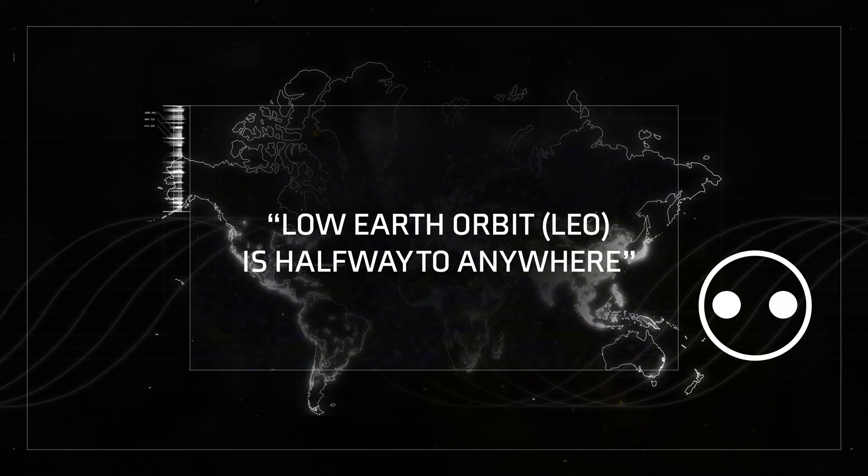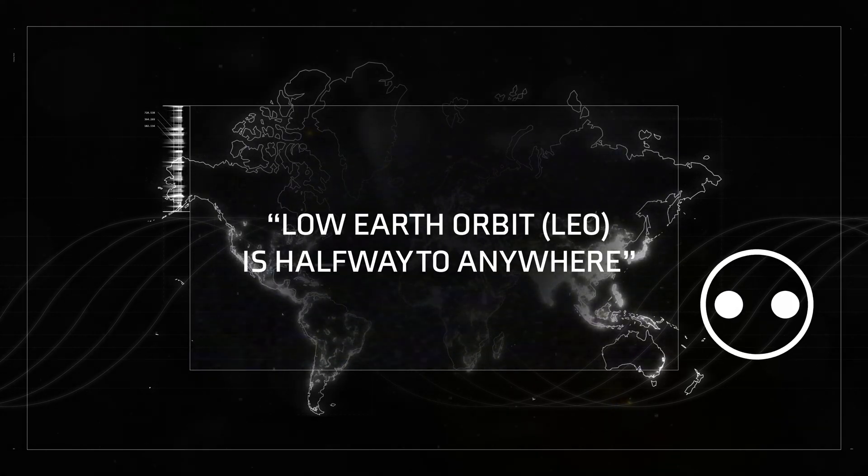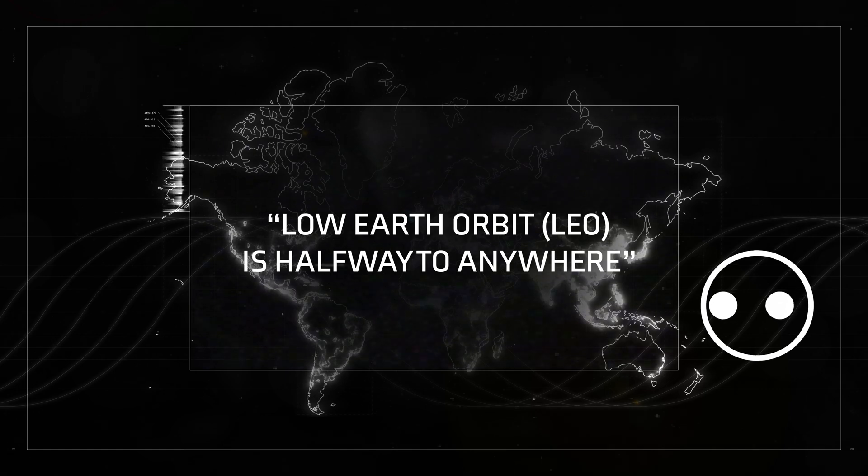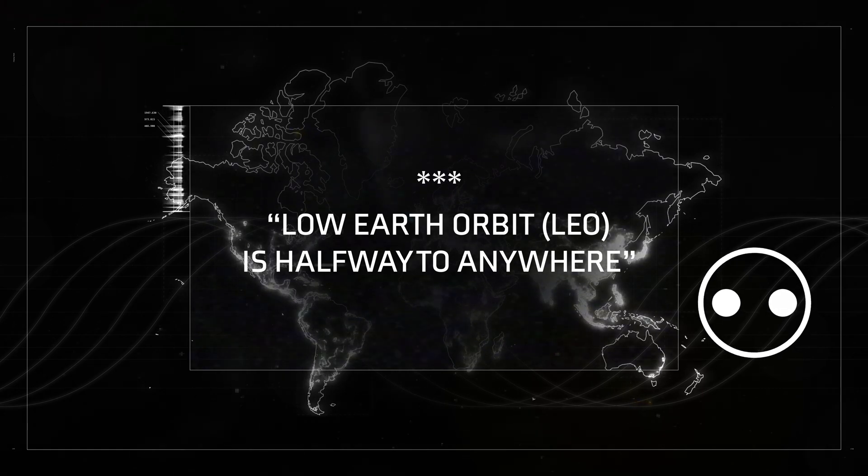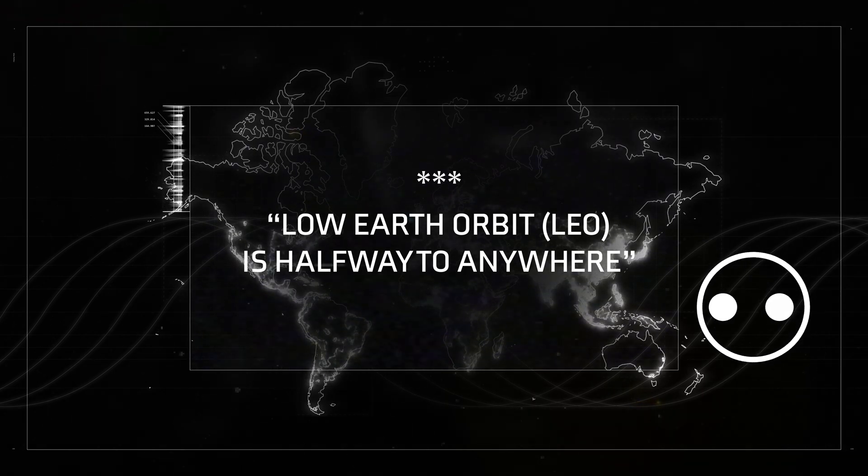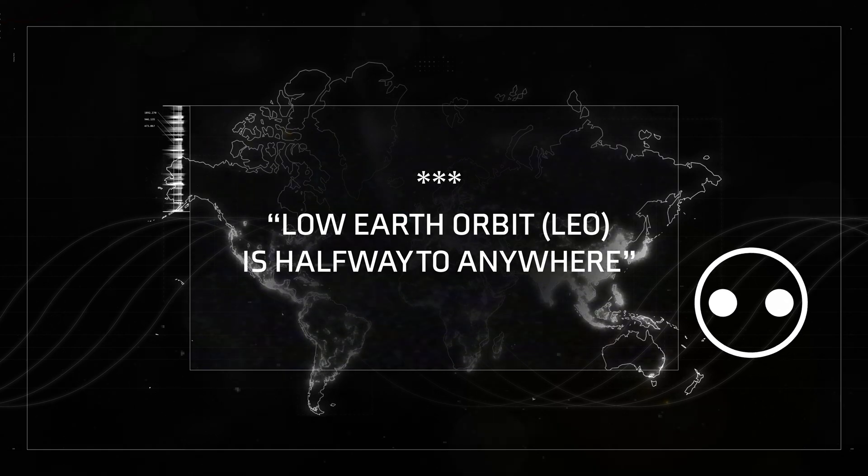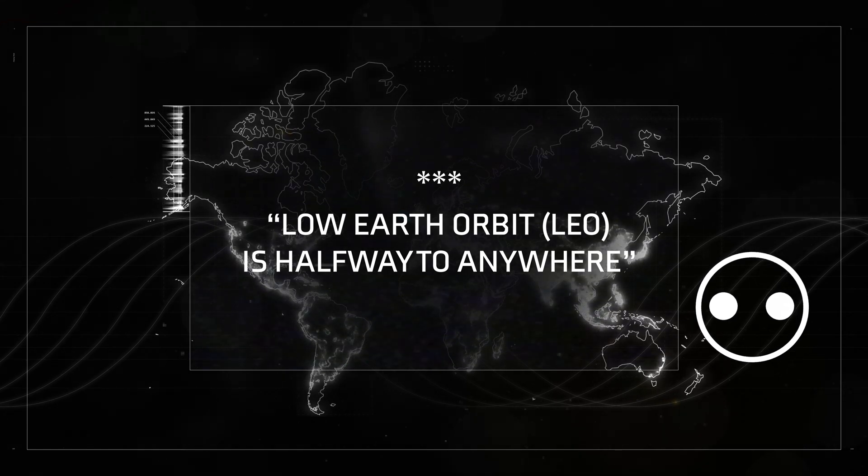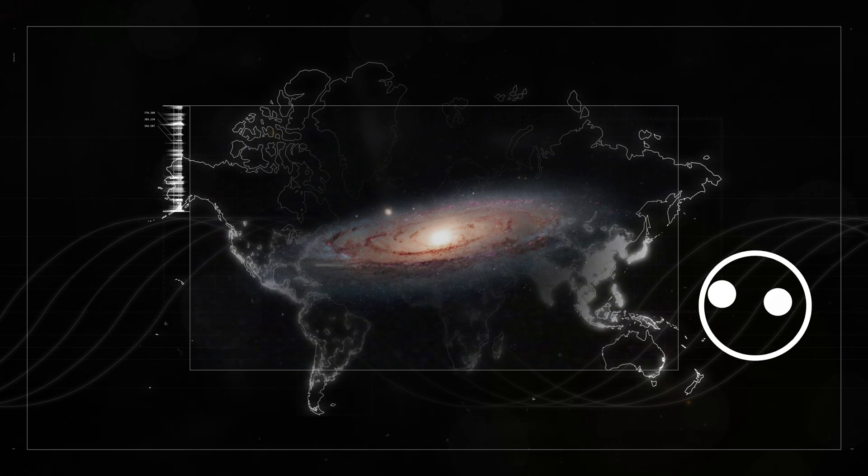So I think that the idea that low earth orbit is halfway to anywhere is actually pretty accurate and it's a really cool way to think about space travel, although I think it needs a few asterisks next to it. First off, low earth orbit is halfway to anywhere in the solar system. It's not halfway to Alpha Centauri or the Andromeda Galaxy, let's not get crazy.